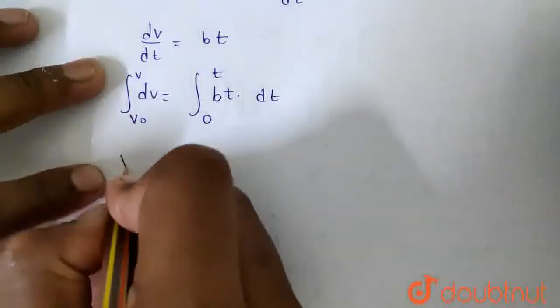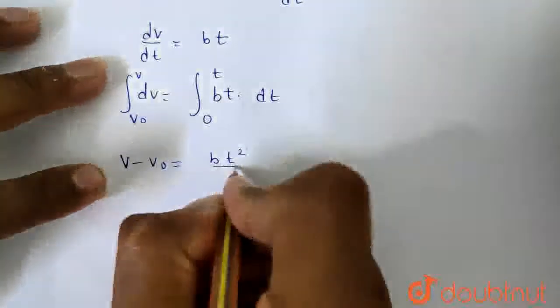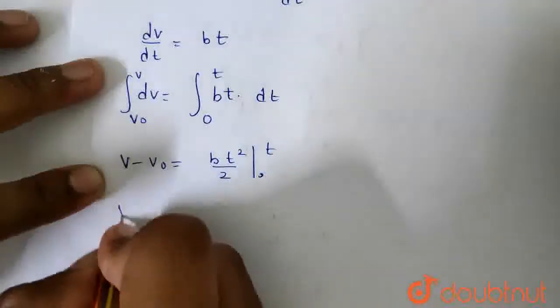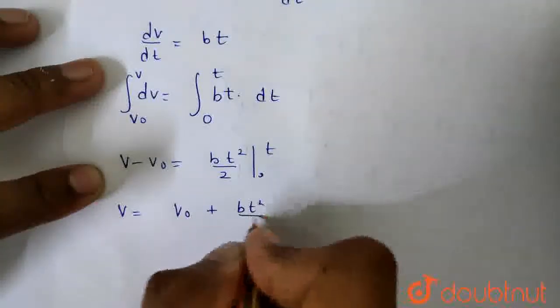I have the value of v minus v0 here, and bt square by 2, from 0 to t. So v is equal to v0 plus bt square by 2.